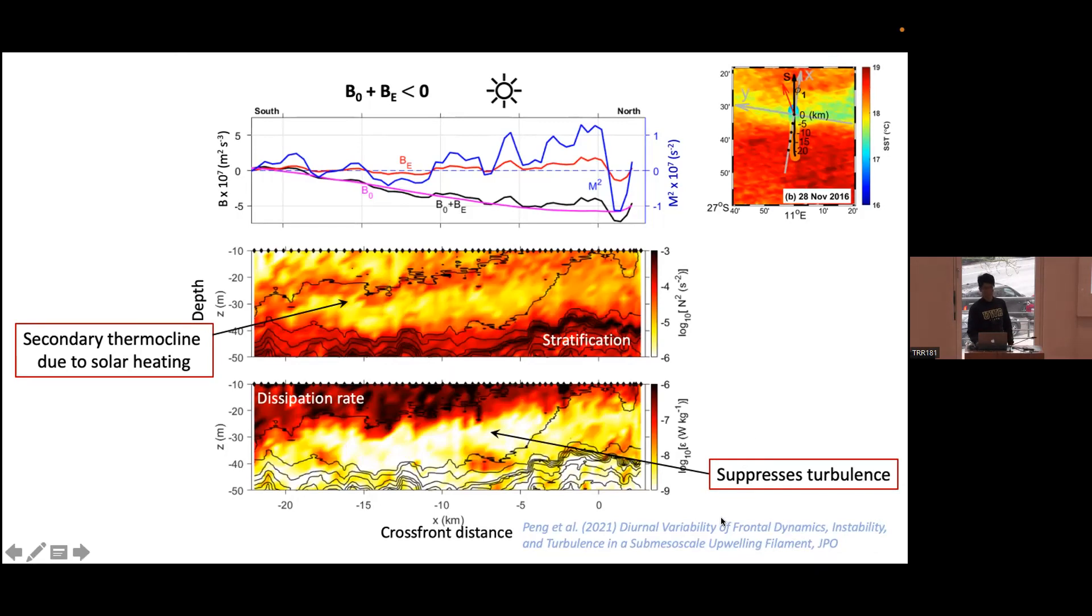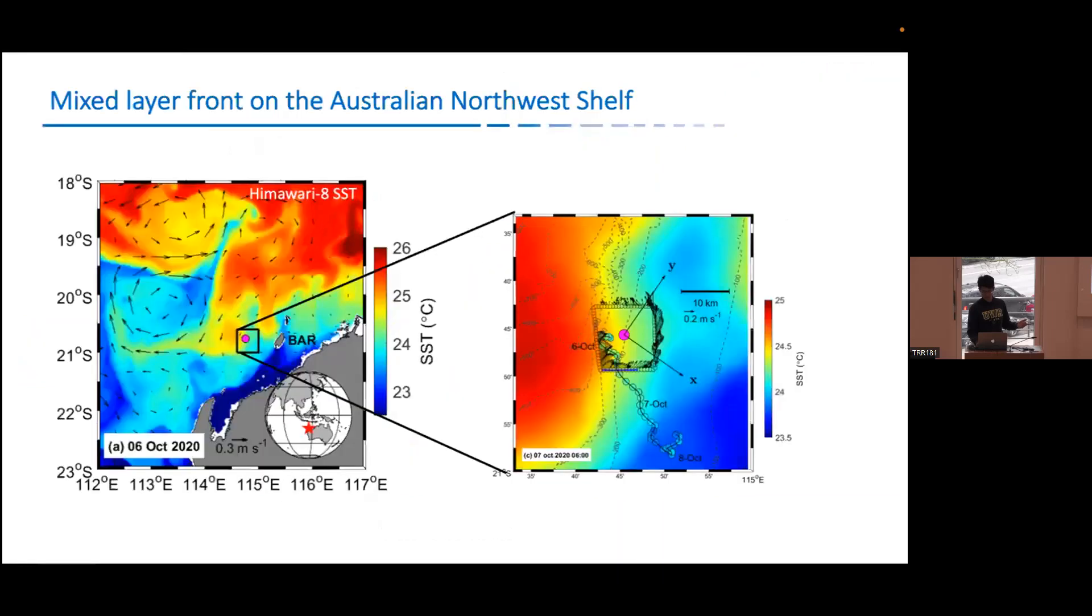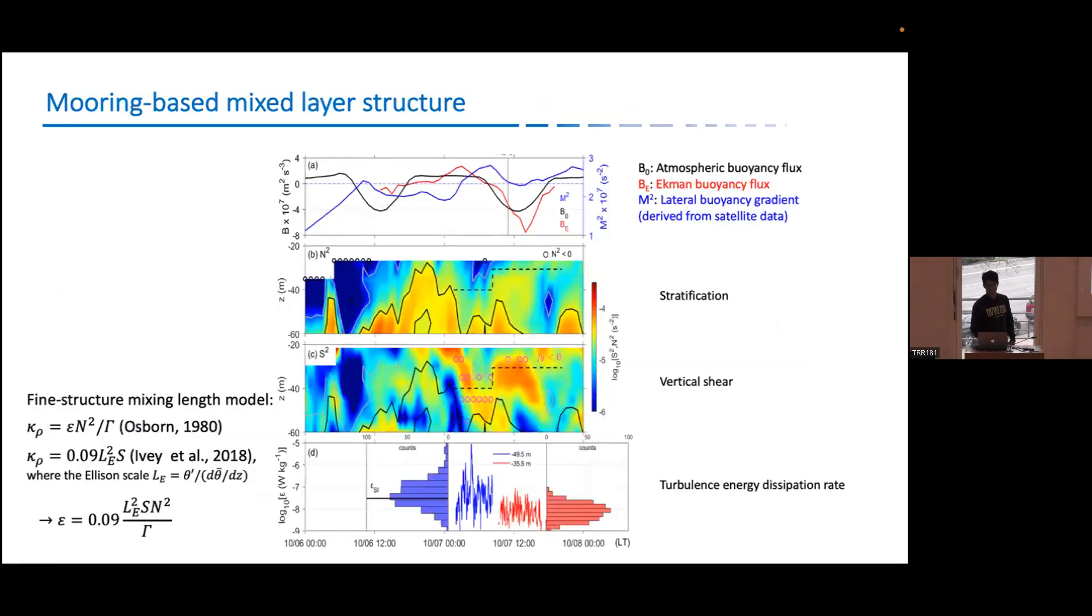However, more surprising data set is here. So again, this is the front. If we zoom into this region, we see this big front and we have the mooring points in this location, the pinpoint. And then we have the glider go all the way from north to south across the front. And we have other instruments. Let's have a look what's going on in this region.